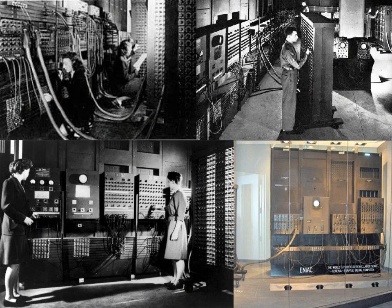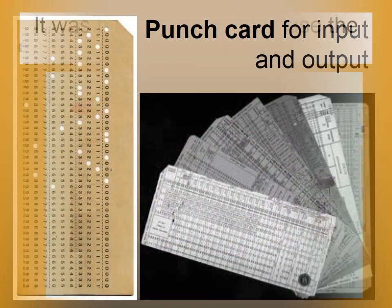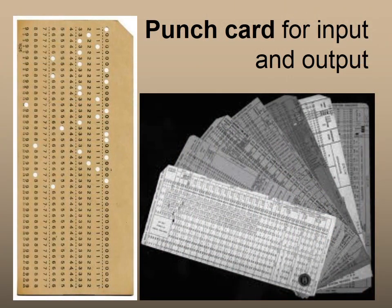This computer was so big that it was spread across so many rooms. It was the first machine to use vacuum tubes. Nowadays, we use pen drives for input and output of data from the computer, and also for storing data. The typical storage capacity of a pen drive varies from 1 GB up to 64 GB, meaning it is capable of storing a large amount of data.